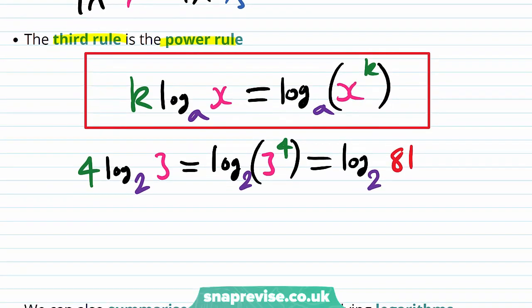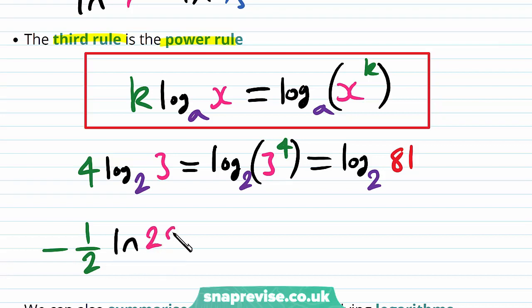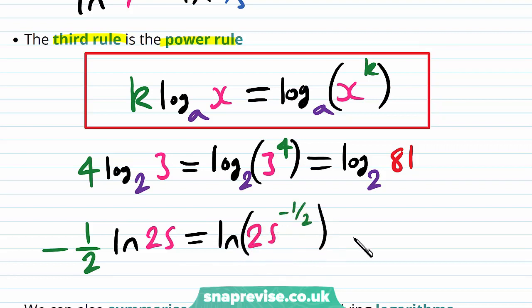Similarly, if we have minus a half times the natural logarithm of 25, this is going to be the natural logarithm of 25 to the power of minus a half. And this gives us the natural logarithm of 1 fifth, by evaluating the 25 to the minus a half.